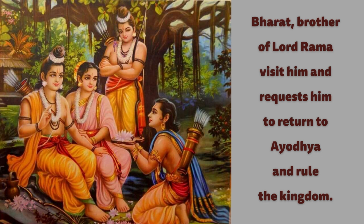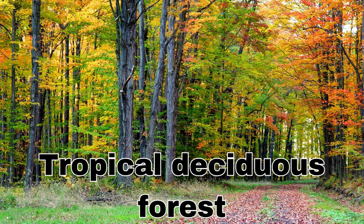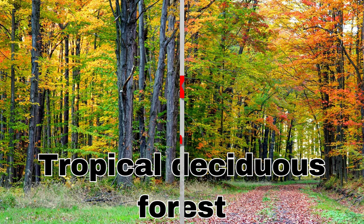Rama's brother visits Chitrakut and requests Rama, Lakshmana, and Sita to return to Ayodhya. Chitrakut is a tropical deciduous type of forest.